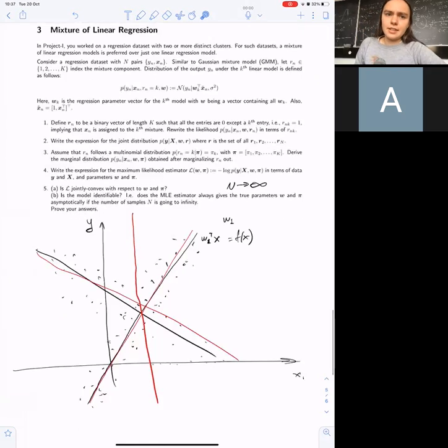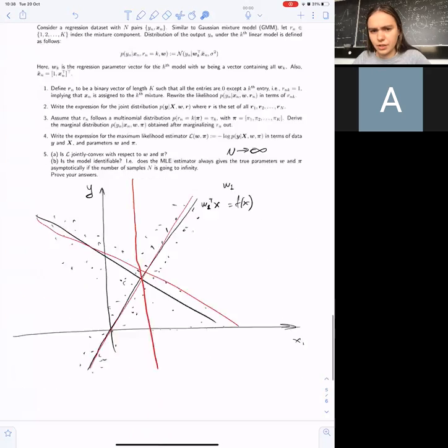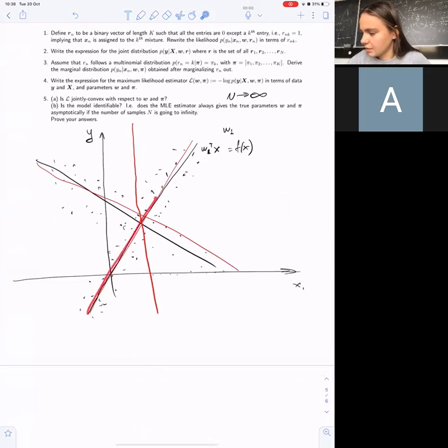In the last question, you're asked to work with a mixture of linear regression. Instead of having just one, you have k mixture components, and every mixture component has its own wk from which this data came. How would your dataset of pairs look if you assume it comes from this normal distribution? It would look like this picture. For example, this is w1, this is w2, and your data would be normal around these lines basically.